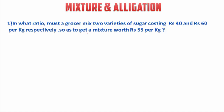so as to get a mixture worth rupees 55 per kg? In this we have two varieties of sugar — first is rupees 40 and the other is rupees 60 — and we have to find the ratio in which these two are mixed to get a mixture worth rupees 55 per kg.